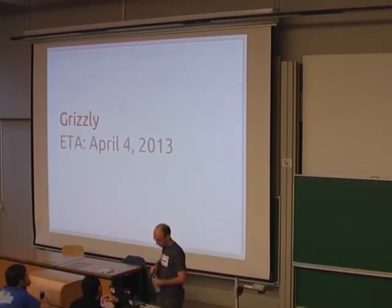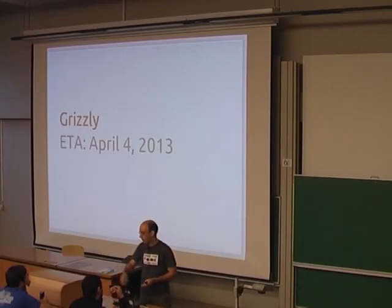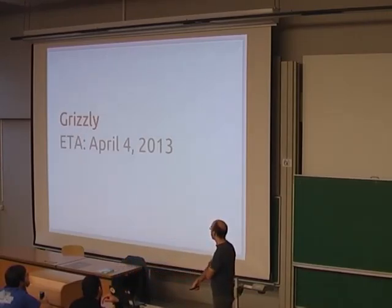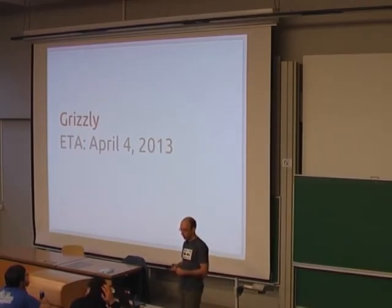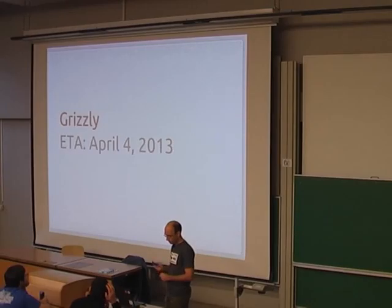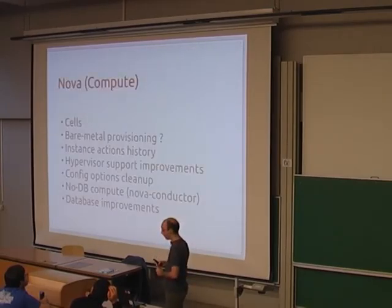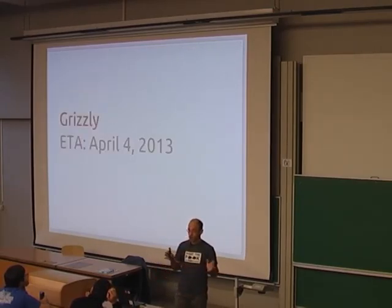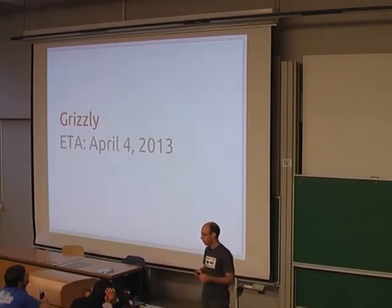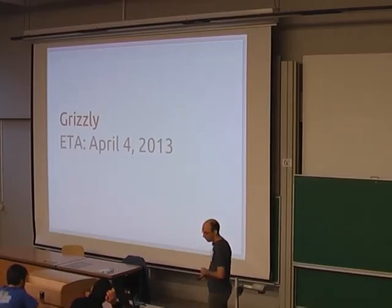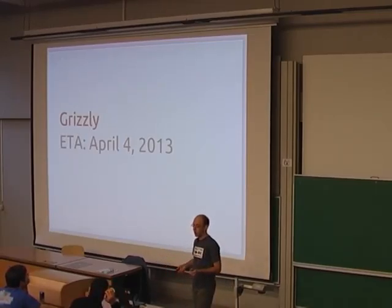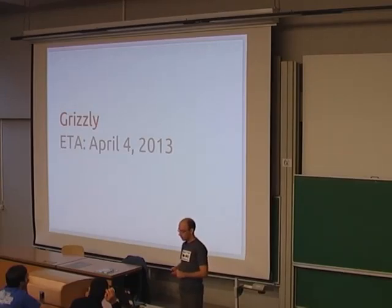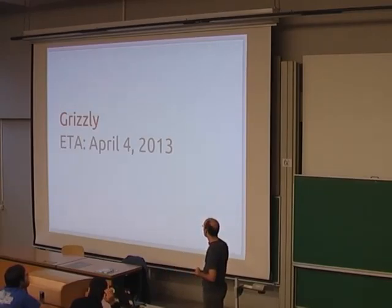So what's coming up? We are past the middle of our Grizzly development cycle, which is supposed to end on April 4th. More than 200 features are lined up, though we don't know exactly what will make it. Some are already merged and some are in progress. I've tried to select features that are interesting and that we're reasonably sure will make it.